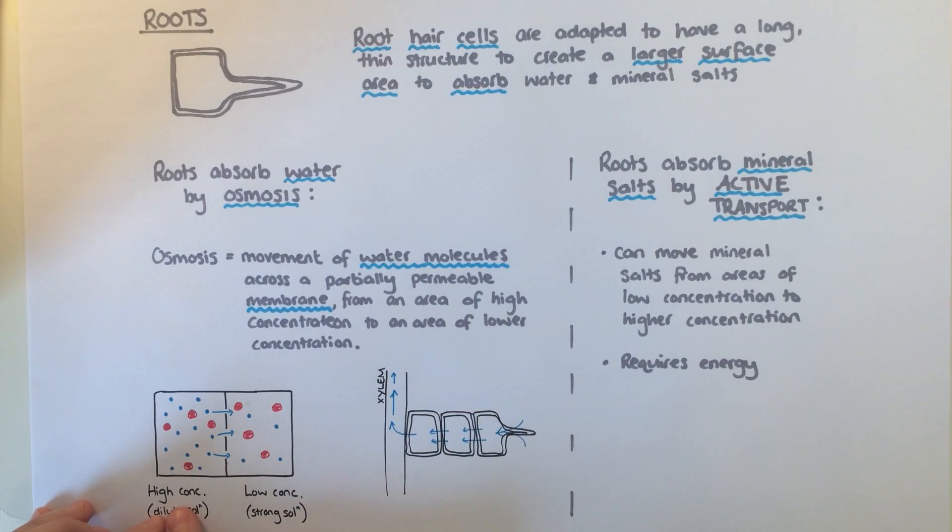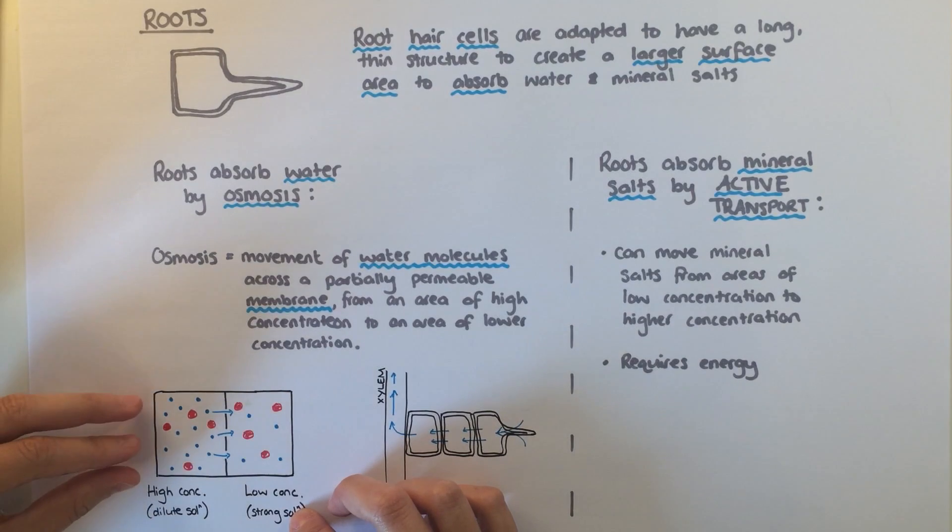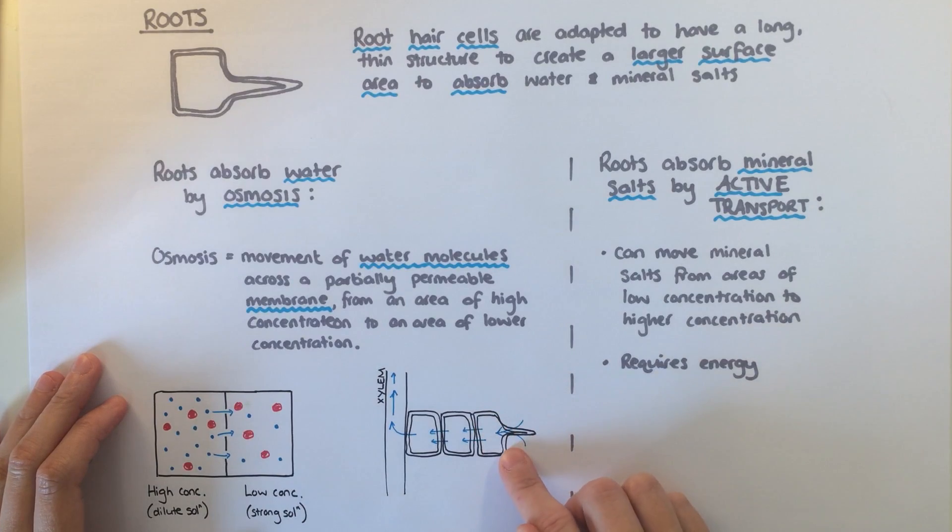Here, we can see on the left a very weak or dilute solution, such as that found in the soil. There's lots of water compared to other atoms. Inside the cell, there is a lower concentration of water, creating a strong solution. The water molecules pass out of the soil into the root hair cells. It's also how they pass from cell to cell until they eventually reach the xylem.